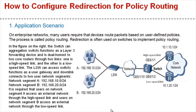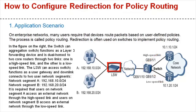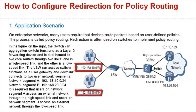In the figure to the right, the switch — an aggregate switch — functions as a Layer 3 forwarding device. It is dual-homed to two core routers through two links: one is a high-speed link and the other is a low-speed link. The LSW and access switch functions as a user gateway, connecting two user network segments: network segment A (192.168.10.0/24) and network segment B (192.168.20.0/24). Users on segment A access the external network through the high-speed link, and users on segment B access it through the low-speed link.